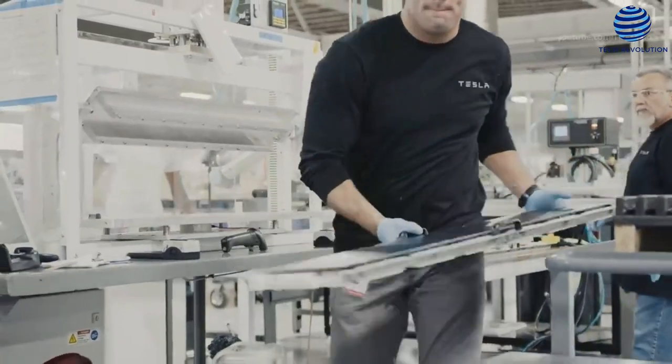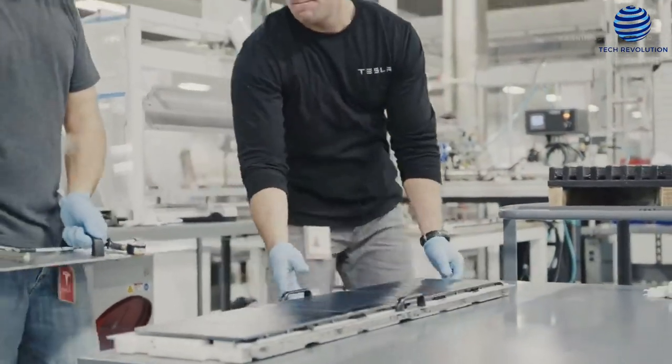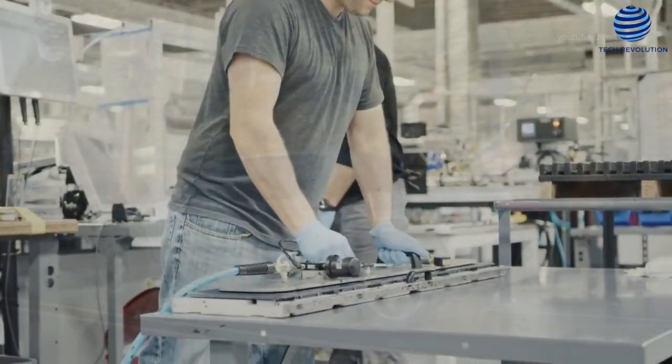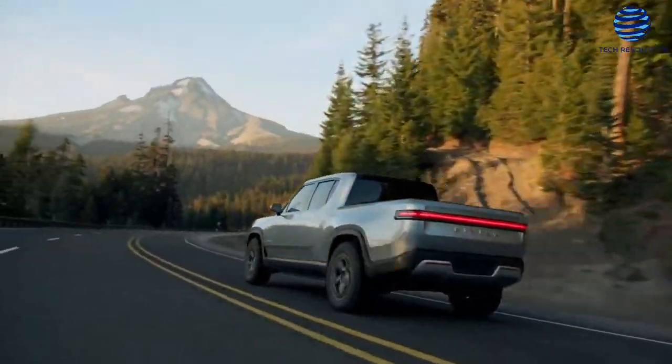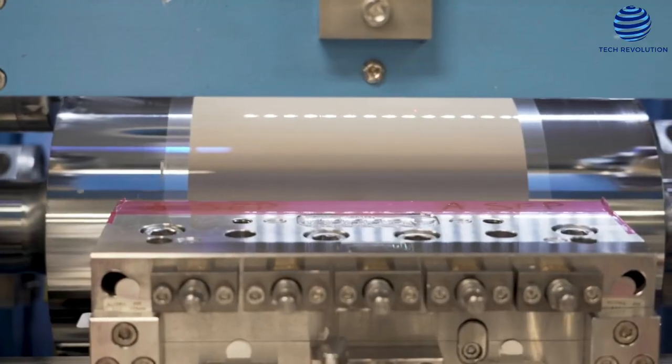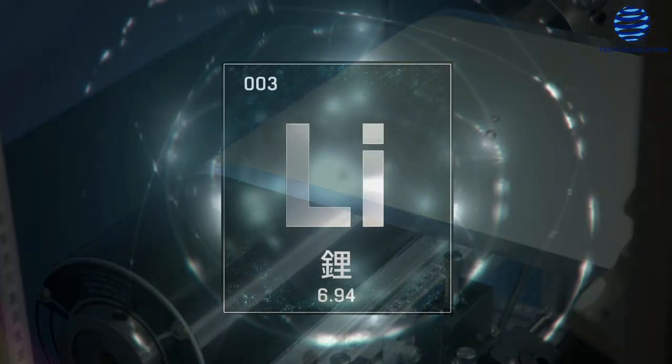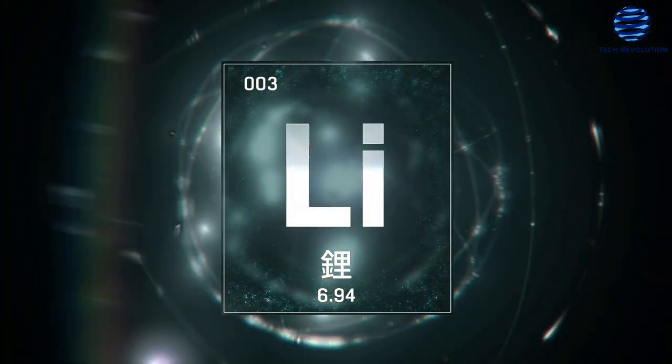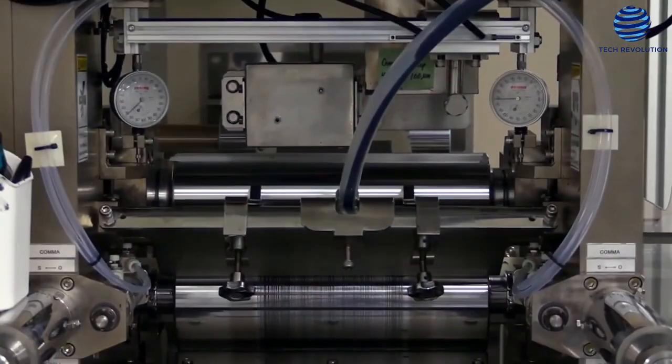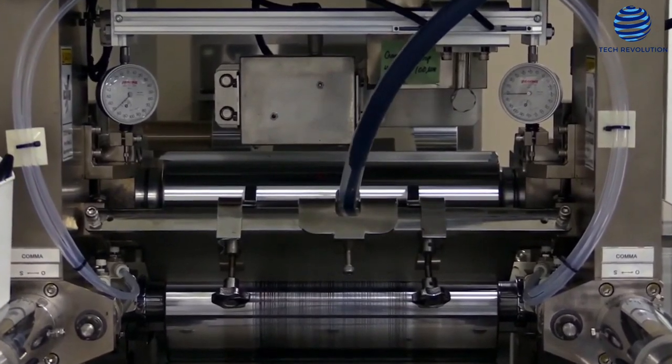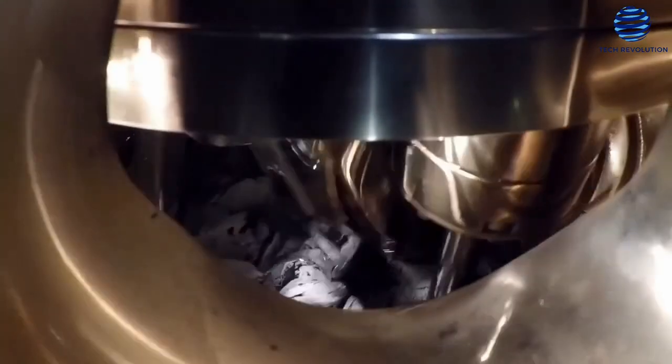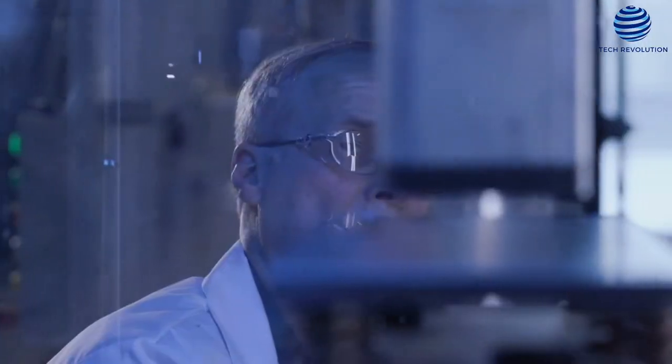While energy density and battery lifetime improvements appear to be the most pressing difficulties, there are environmental and geopolitical issues linked with present lithium-ion batteries that are as, if not more essential, to address in order to achieve the battery of tomorrow. Over 80% of the world's lithium reserves are in China, and current technology also significantly relies on cobalt, which is largely found in the Democratic Republic of the Congo.